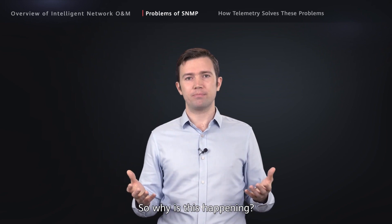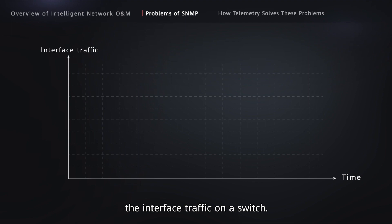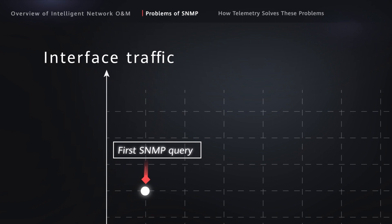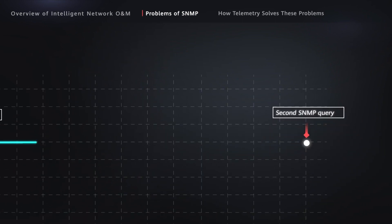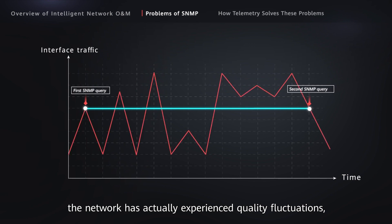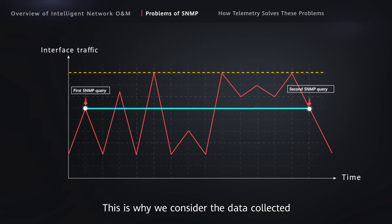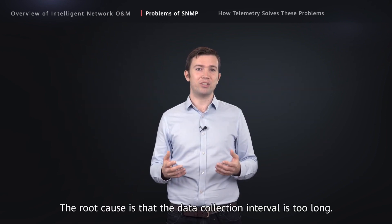So why is this happening? Let's take a look at this graph. Assume that it is showing the interface traffic on a switch. The network is normal upon the first SNMP query on the NMS. After five minutes, another SNMP query is initiated and the network is still normal — everything seems fine. However, during these five minutes, the network has actually experienced quality fluctuations and even traffic bursts. The issue is SNMP does not detect the problem. This is why we consider the data collected by SNMP to be inaccurate — the root cause is that the data collection interval is too long.